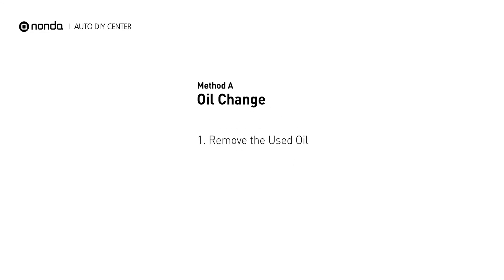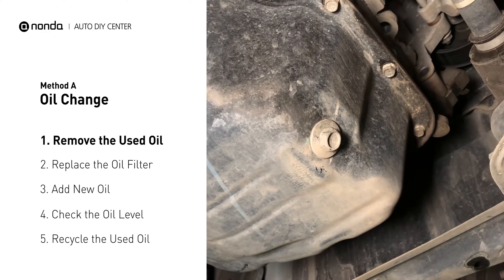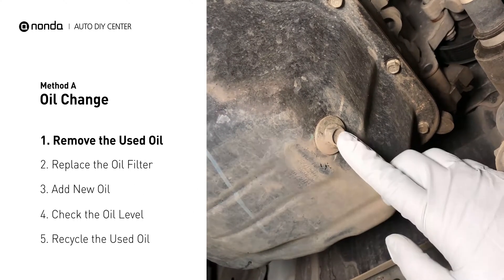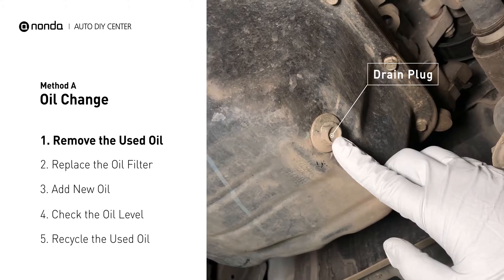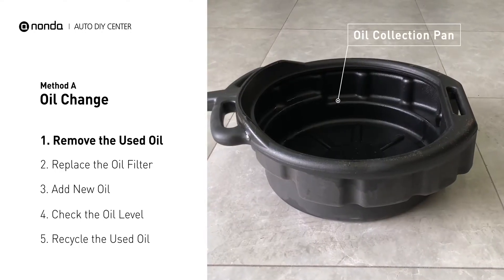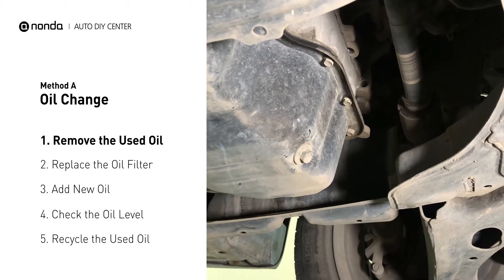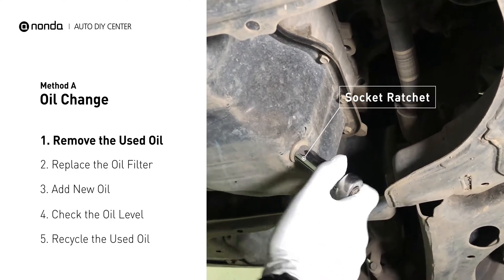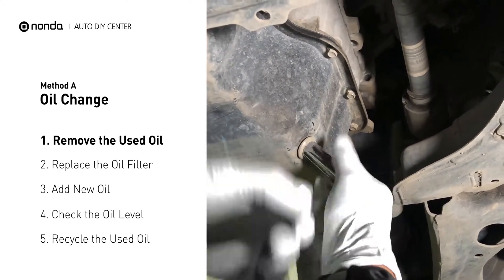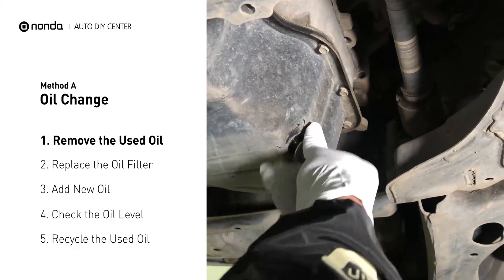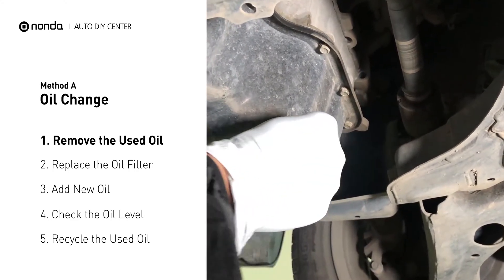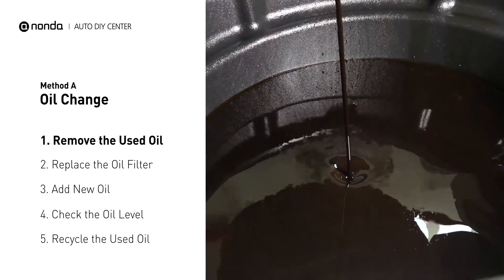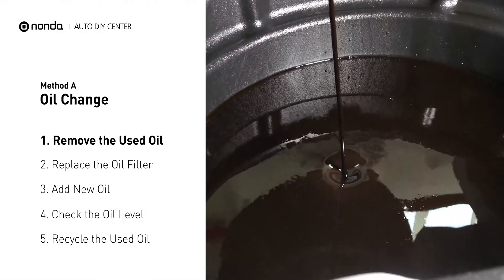Method A: Oil Change. Locate the oil drain plug on your vehicle and place an oil collection pan underneath it. Use a socket ratchet to remove the plug from the oil pan on your vehicle. Once the plug is removed, the oil should start flowing out into your collection pan.